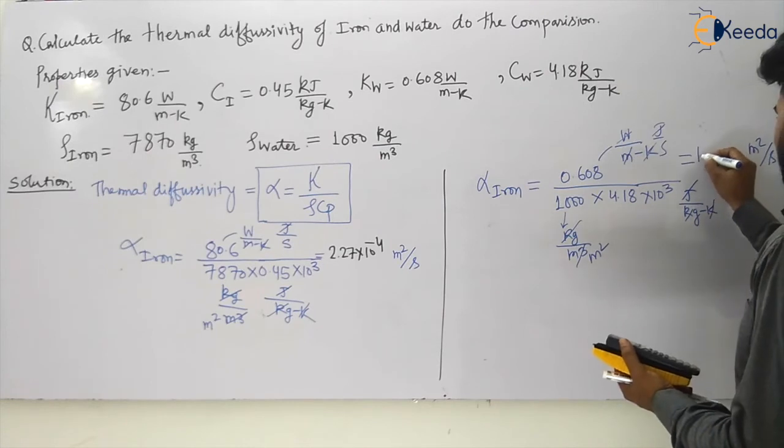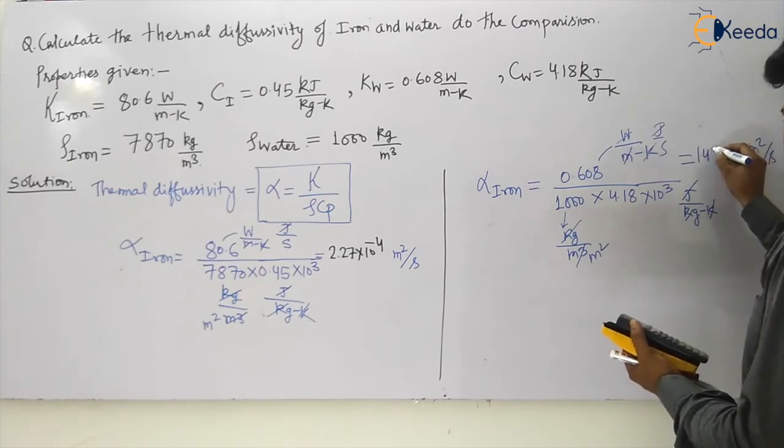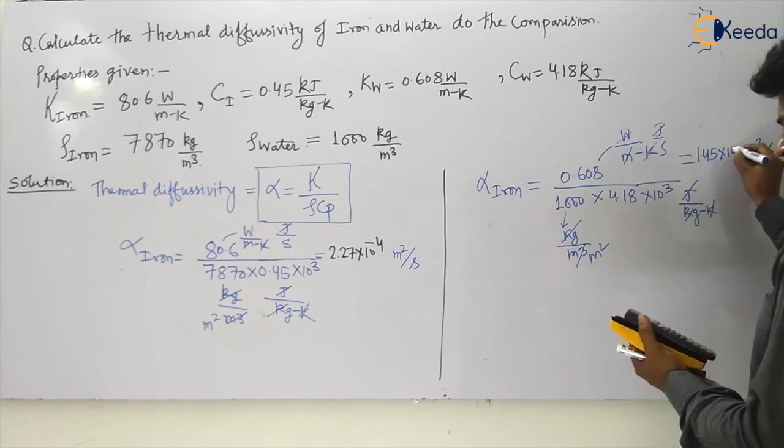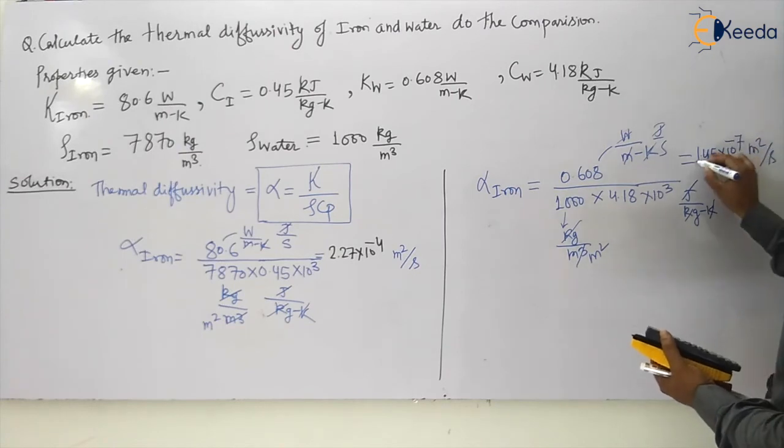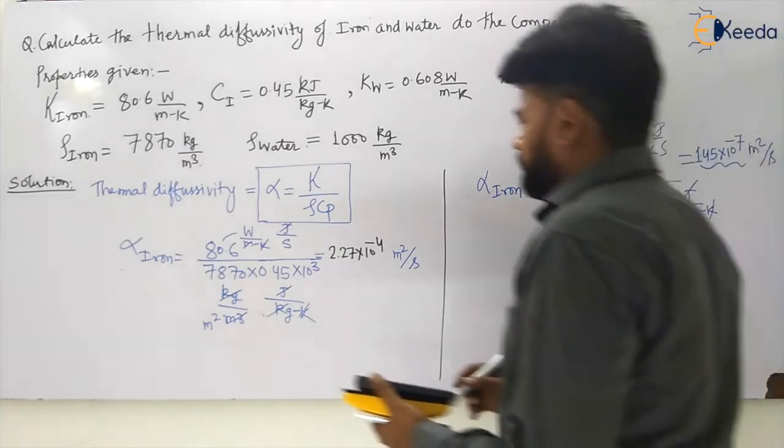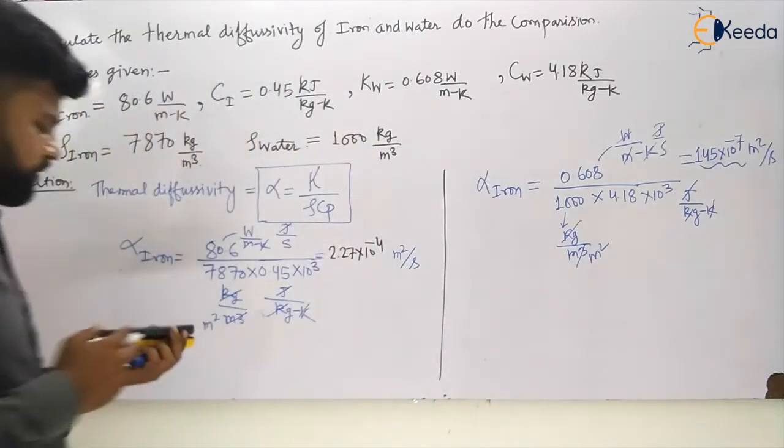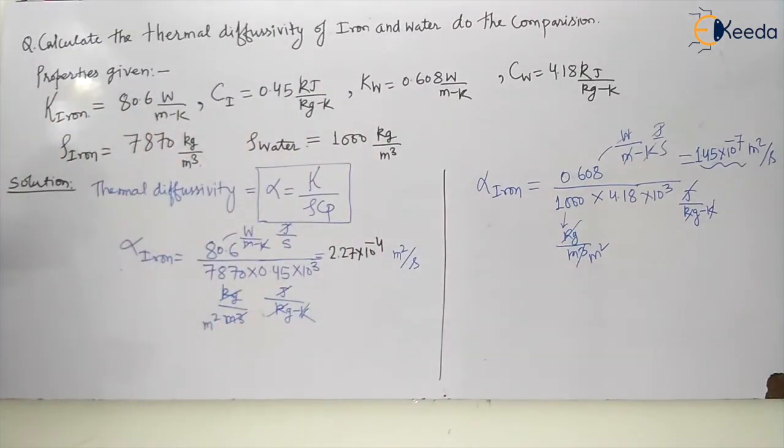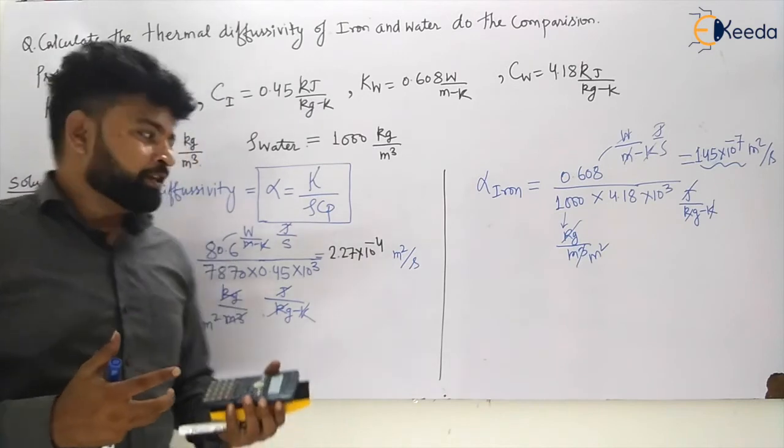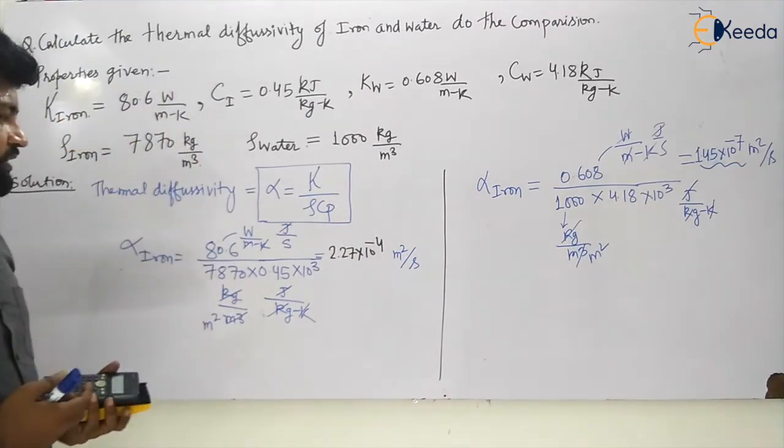So this will become 1.45 into 10 to the power minus 7. So this is becoming 10 to the power minus 7 and this is coming to be 10 to the power minus 4. You can see the difference. That difference is of 1000.